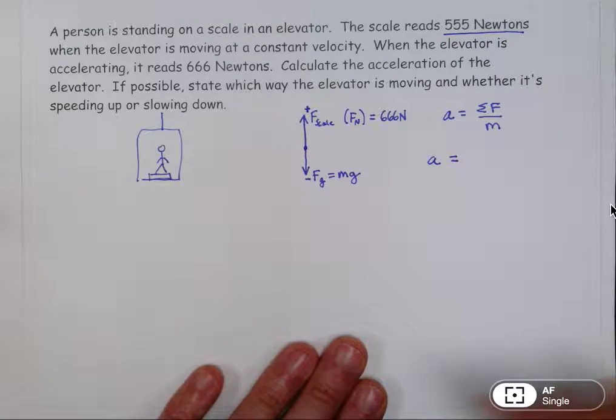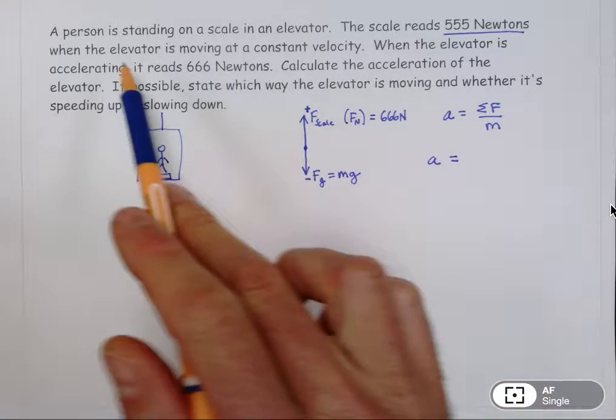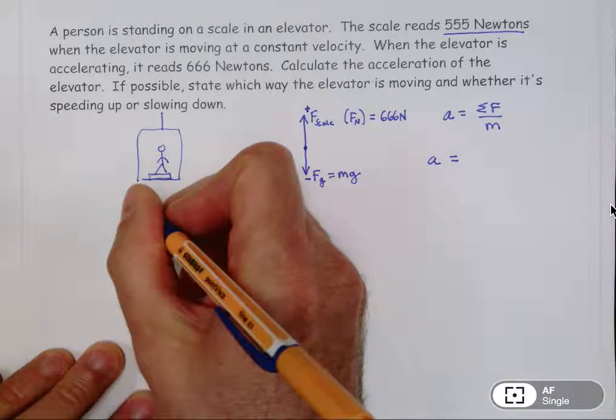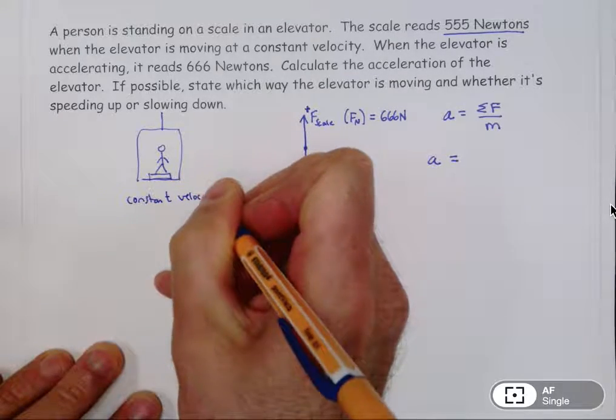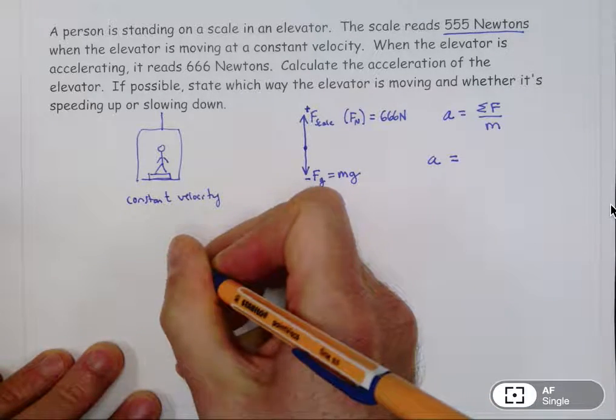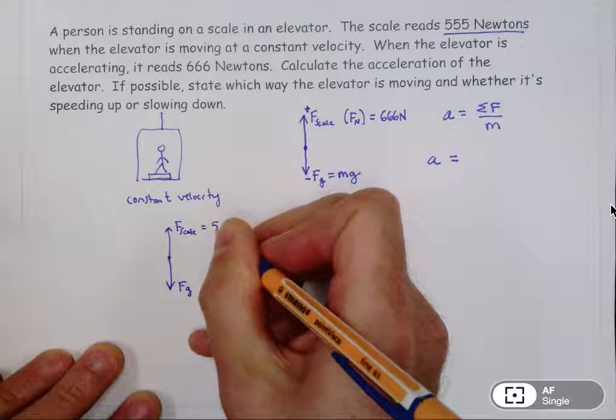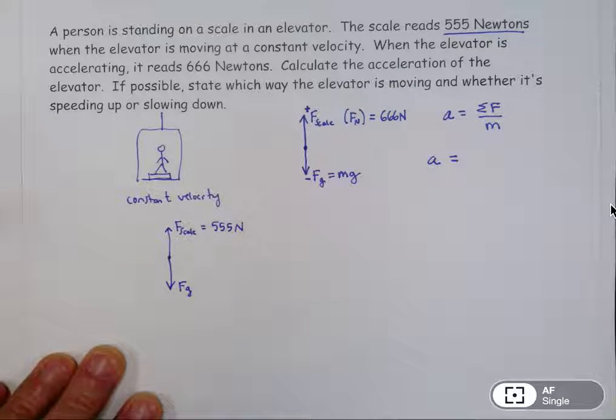And so why is that helpful to us? Well, it says that that's what the scale reads when the elevator is moving at a constant velocity. So maybe just for a moment, I'm going to make a separate diagram here for the constant velocity situation. Still, there's a downward force of gravity. Still, there's an upward force that the scale exerts, which they're telling us is equal to 555 newtons. And so how does this help us?